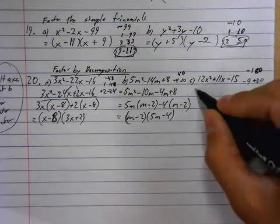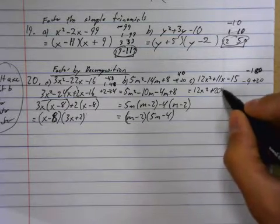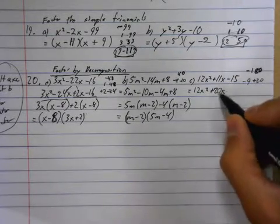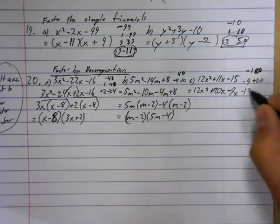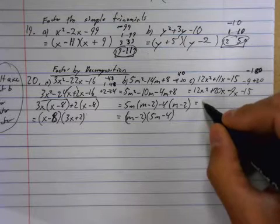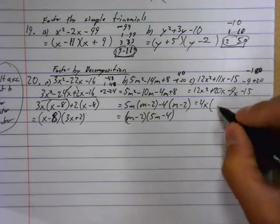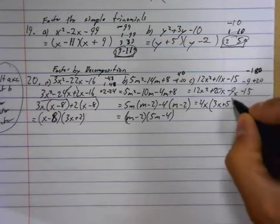So, I'm going to do this equals 12x squared plus 20x minus 9x minus 15. Common factor out of the first two, I can take out, what, a 2? Is that it? No, I can take out a 4. I can take out a 4x. That leaves me with 3x plus 5.